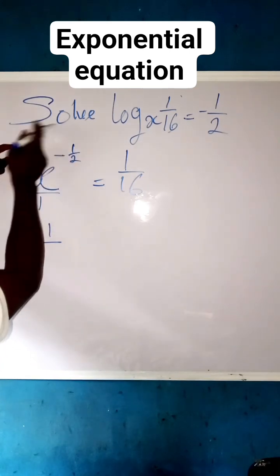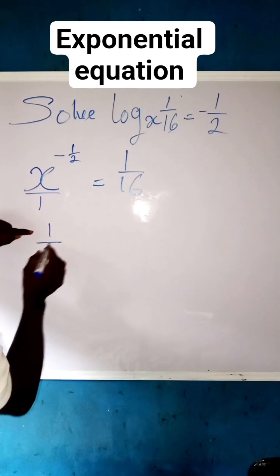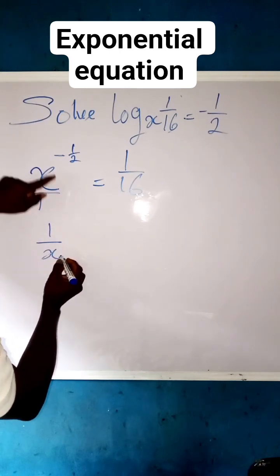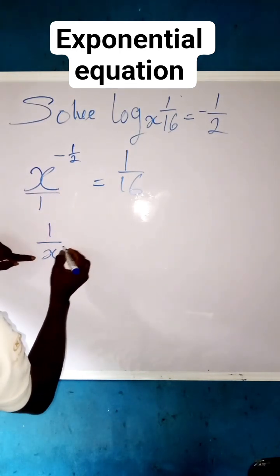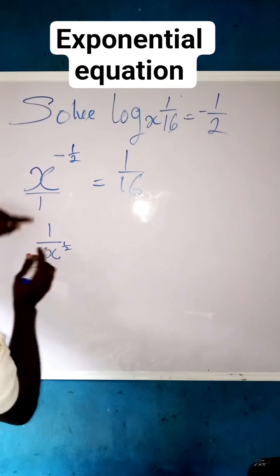So now we have 1 over x. When we have 1 over x, we are now having raise the power of 1 over 2. Remember we are not having negative sign again here.